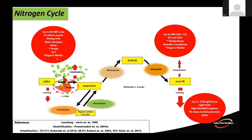Conditions favouring volatilisation losses include: drying soils, light rain events or showery conditions, rainfall less than 5–10mm insufficient to dissolve and move urea into the soil, open canopy with insufficient grass cover, higher temperatures, and higher pH soils with high organic matter. Moisture is really important — you need enough rainfall within a few days of application to lock that nitrogen in.